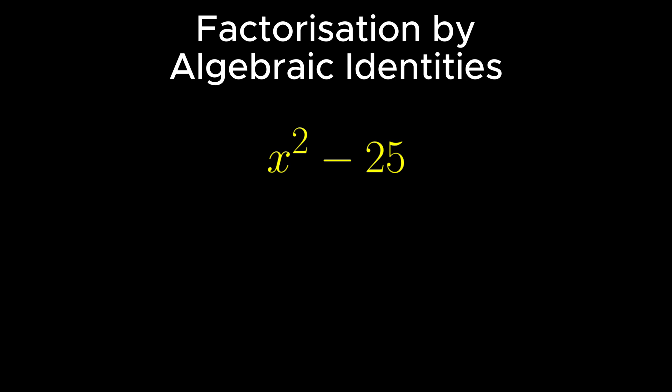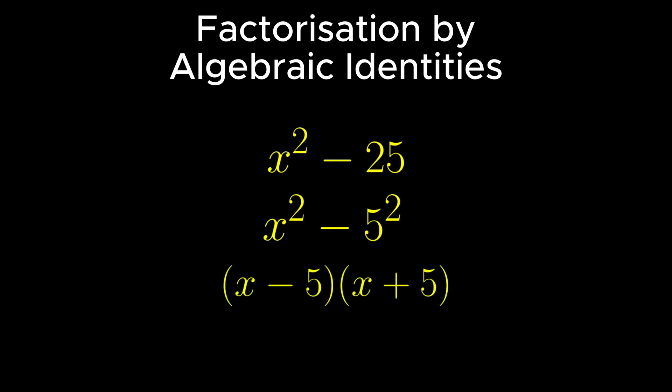By critical thinking, 25 can be expressed as the square of 5. Thus x squared minus 25 can be written as x squared minus 5 squared, which is simplified as x minus 5 into x plus 5. Thus x minus 5 is the first factor, while x plus 5 is the second factor.